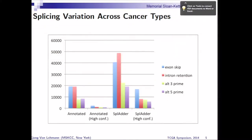Here you can see an overview of our efforts. On the very left, you can see the already annotated splice events broken down into different types. Here is what we have filtered down to — a very stringent filter towards a set of events we have high confidence in based on the data. And this is what we have generated using Splatter, filtered with the same thresholds, adding a lot of new splicing events to the already existing annotation.